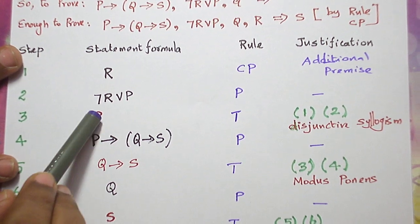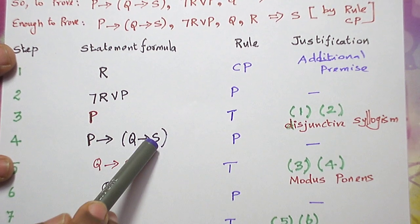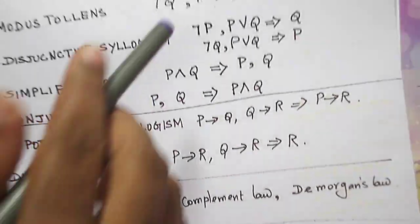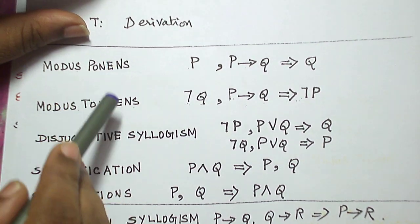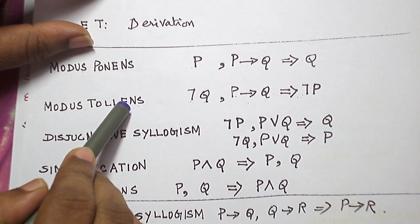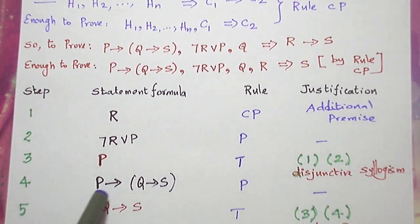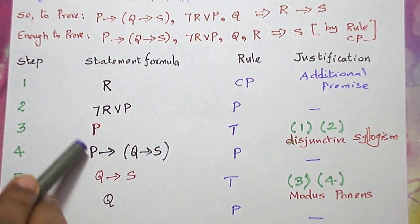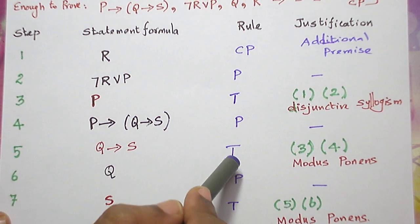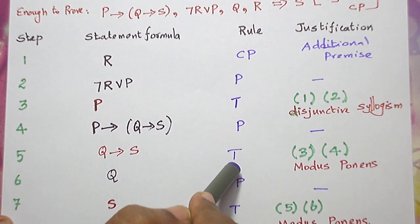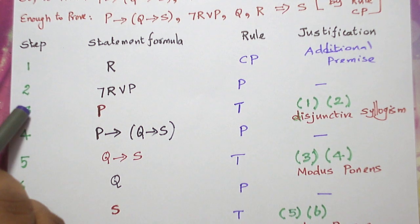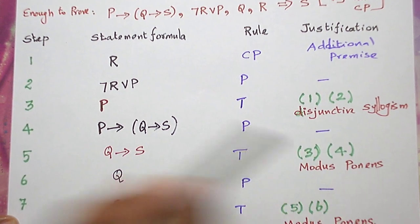When I combine P and P conditional Q conditional S, this can be combined by modus ponens since we have a conditional connective. With P conditional Q conditional S, P is the left hand side, so we use modus ponens and get the right hand side Q conditional S as the derived formula by rule T. We have combined the statement formulas in steps three and four using modus ponens.